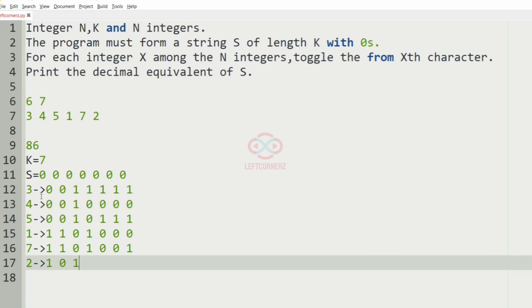And then we have two so we'll toggle from the second position. And this represents the decimal equivalent that is 86 which will be our output.